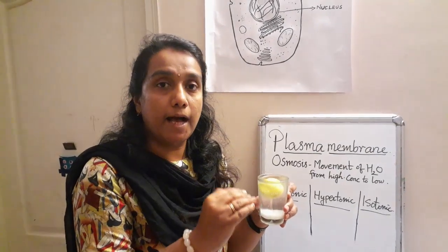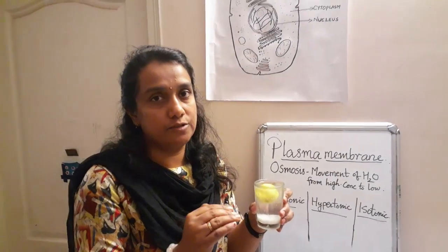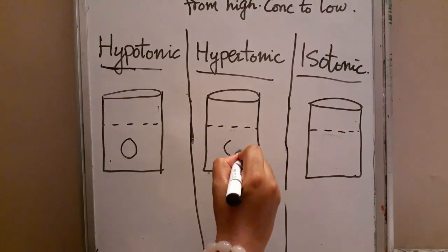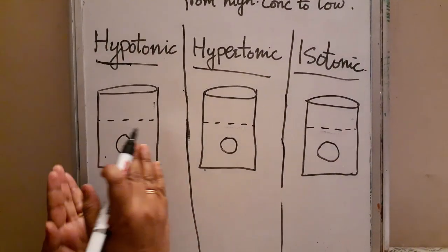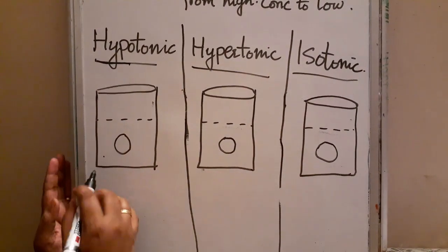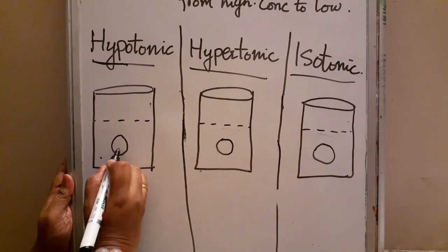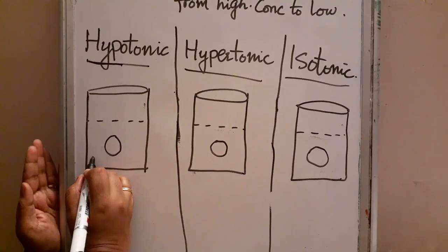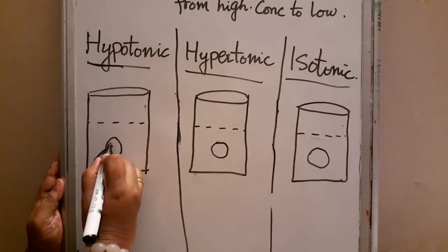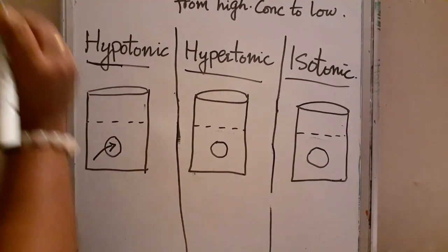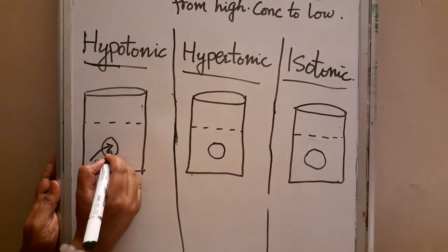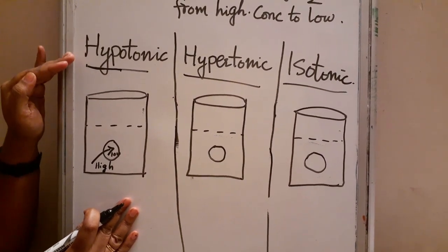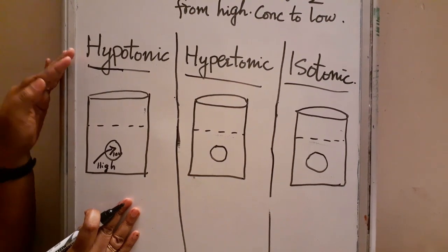This type of solution is known as the hypertonic solution. Now let us see three conditions using three cells in three beakers with different solutions. In the first beaker, the concentration of water outside is more and inside the cell the concentration of water is less. So according to osmosis, water moves from high concentration to low concentration through a semi-permeable membrane — as we already seen in the case of raisins and dry grapes.